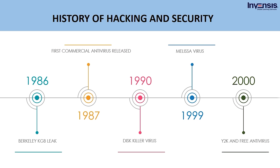In 2000, there was the Y2K problem, where dates beyond December 31, 1999 would be interpreted as 1900 instead of 2000. Programmers used a technique called windowing, which would take all dates from 00 to 20 as from the 2000s and not from the 1900s. Also in the year 2000, the first free antivirus was released in the market.